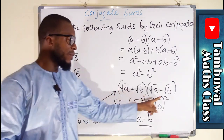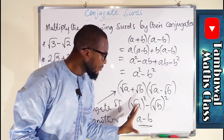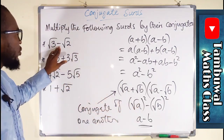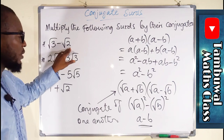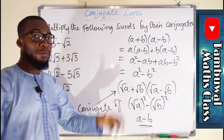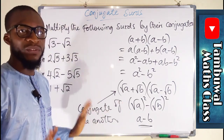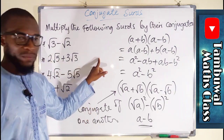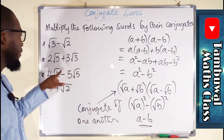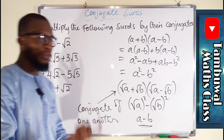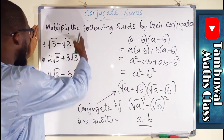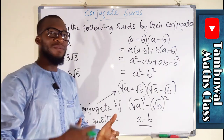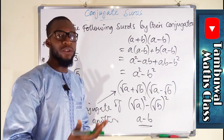They only have a difference of sign. The same thing is applicable here: if you are looking for the conjugate of root 3 minus root 2, it is going to be root 3 plus root 2 — just a difference of sign. Wherever you have a positive sign, you take the negative, and wherever you have a negative sign, you take the positive. Now let us see how we can multiply these sets of surds to verify that we obtain a rational number.